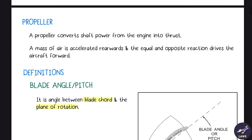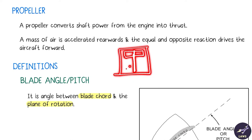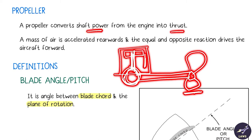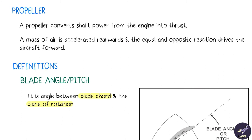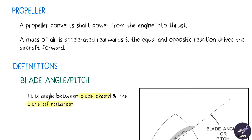Propellers convert shaft power from the engine into thrust. The engine has pistons which keep moving up and down, connected to a crankshaft. The crankshaft converts this linear motion into rotary motion and sends the power forward to the propeller. A mass of air is accelerated rearwards, and the opposite reaction drives the aircraft forward.